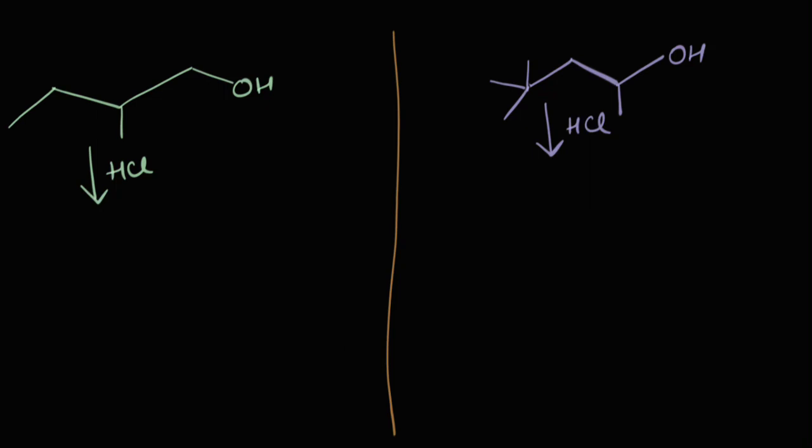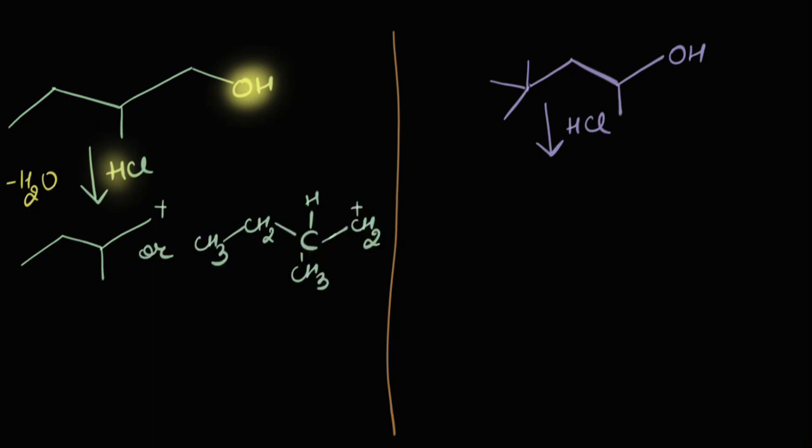OH- is not a good leaving group. But oxygen has a lone pair of electrons. It's going to take up the proton and leave as a water molecule forming this carbocation. Let's just rewrite it so that we get a better image of what we are going to do. This carbocation here so formed is a 1 degree carbocation.